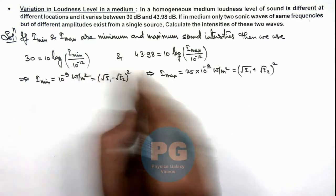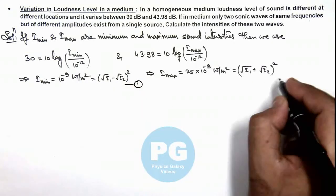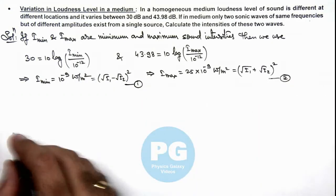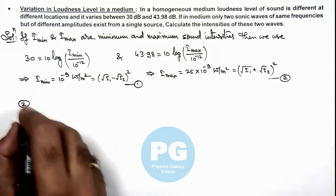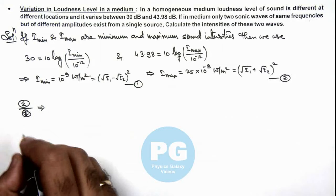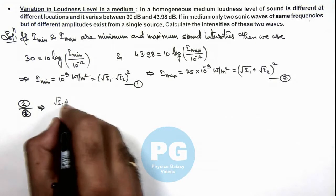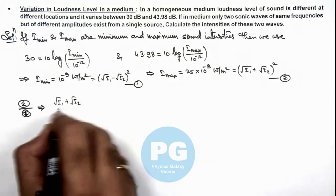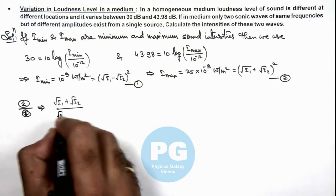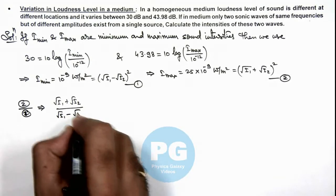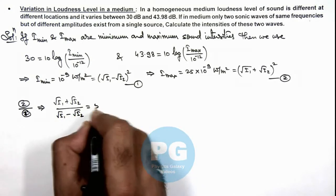So if we divide these equations, say if it is equation 1 and this is equation 2, then we take the ratio of equation 2 and 1 which will result root I_1 plus root I_2 divided by root I_1 minus root I_2 is equal to 5.